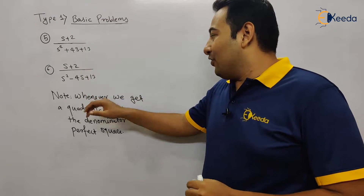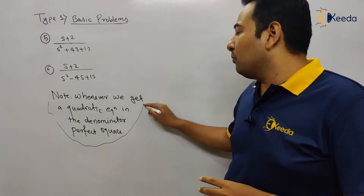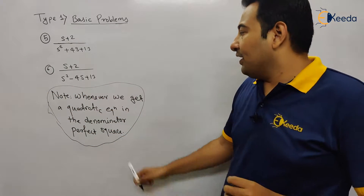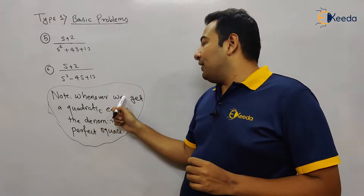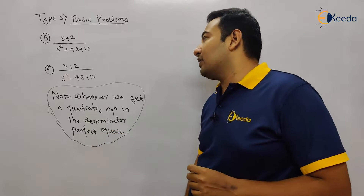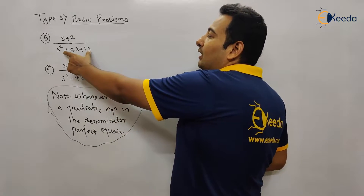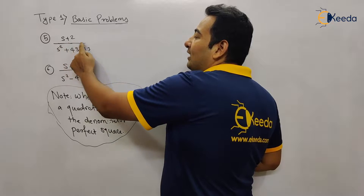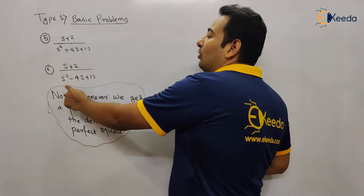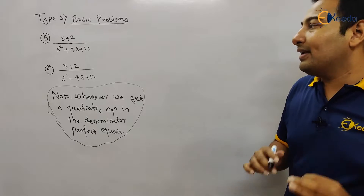There is a very important note here. The note says: whenever we get a quadratic equation in the denominator, we make it a perfect square. In both the cases we are getting a quadratic equation in the denominator, and if this is the case, we're going to make it a perfect square.